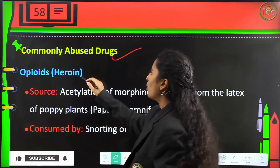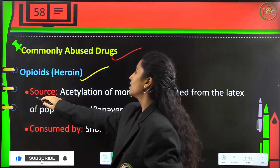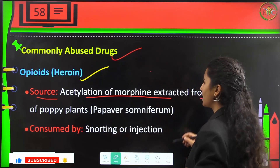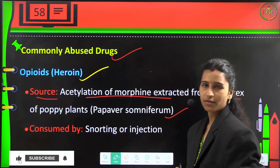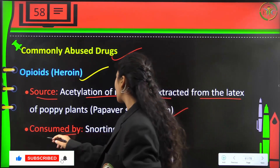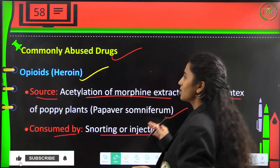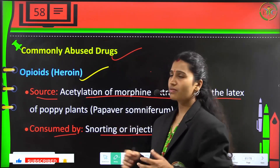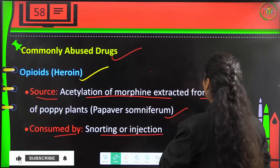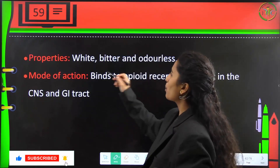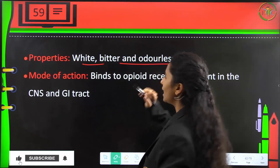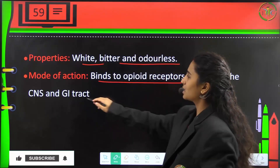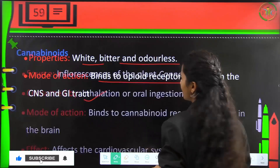Commonly abused drugs include opioids such as heroin. The source is the acetylation of morphine extracted from the latex of poppy plants, Papaver somniferum. It is consumed by snorting or injection. It is white, bitter, and odourless. Its mode of action is binding to opioid receptors present in the CNS and the gastrointestinal tract.